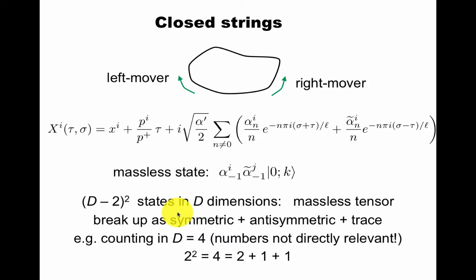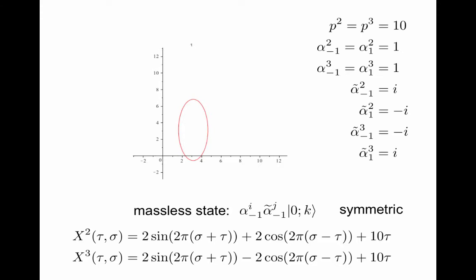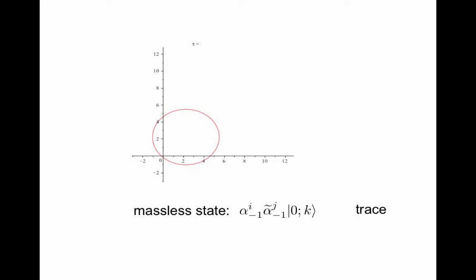So for example in four dimensions, we're not directly working in four dimensions, but because you might be more used to the counting there, d-2 in four dimensions would be two, two squared is four, four is two plus one plus one. So in four dimensions you would have two symmetric polarizations, one anti-symmetric and one trace. A symmetric two tensor that has two polarizations will be a graviton. So the graviton is described by the symmetric part of this massless state of closed strings. What the other two objects are, the anti-symmetric and the trace, right now they look like some kind of extra junk. We'll get back to them later. So this is what a closed string oscillates like in this symmetric state, the graviton. Here's the trace, just for fun. You can figure it yourself how to get this animation.